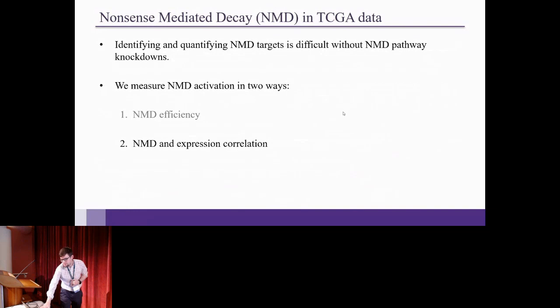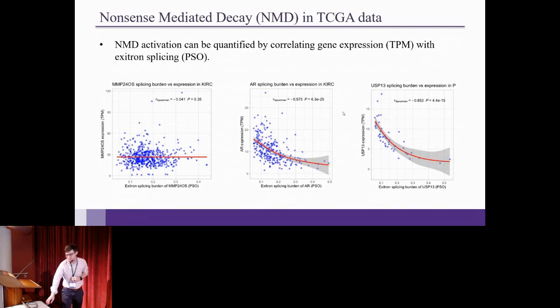Okay. And the other way we calculate it is NMD and expression correlation. So here are three different plots. The one on the left has basically no NMD expression correlation. So we're correlating the PSO values at the bottom there to the TPM values of gene expression. And on the left, there's no correlation. In the middle, there's some correlation, and this is an antigen receptor gene in kidney cohort. And then lastly, in the USP13, there's lots of correlation. And so if these splicing events are triggering NMD, we would expect that the more you're spliced, the lower the gene expression, and that there's sort of a dose-dependent correlation between the two.